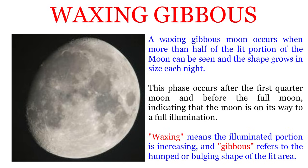A waxing gibbous Moon occurs when more than half of the lit portion of the Moon can be seen and the shape grows in size each night. This phase occurs after the first quarter Moon and before the full Moon, indicating that the Moon is on its way to full illumination. Waxing means the illuminated portion is increasing and gibbous refers to the humped or bulging shape of the lit area.